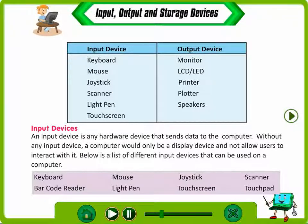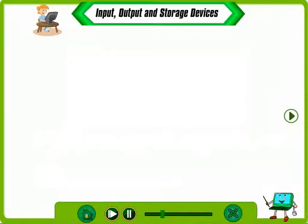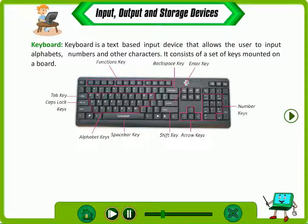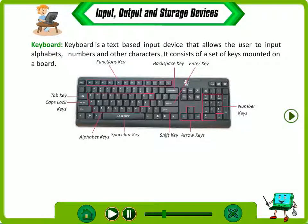A list of different input devices that can be used on a computer includes keyboard, mouse, joystick, scanner, barcode reader, light pen, touch screen, and touchpad. Keyboard is a text-based input device that allows the user to input alphabets, numbers and other characters. It consists of a set of keys mounted on a board.